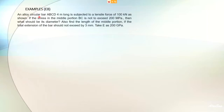An alloy circular bar ABCD is four meters long and subjected to a tensile force of 100 kilonewtons as shown. The stress in the middle portion BC is not to exceed 200 megapascals.